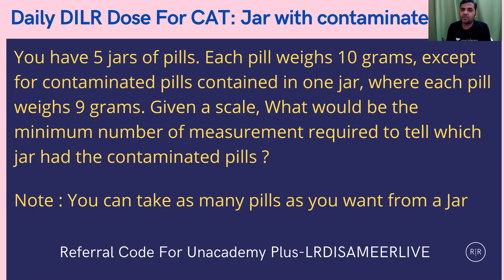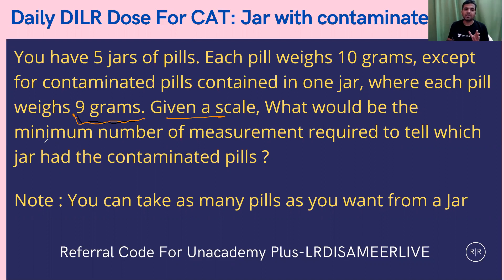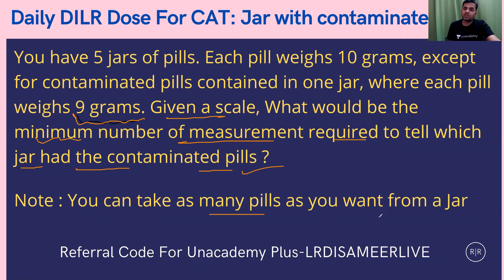You have 5 jars of pills. Each pill weighs 10 grams, except for the contaminated pills contained in one jar, where each pill weighs 9 grams. The jar with the contaminated pill contains pills with a weight of 9 grams. Given a scale, what would be the minimum number of measurements required to tell which jar has the contaminated pills? As a note, you can take as many pills as you want from a jar.